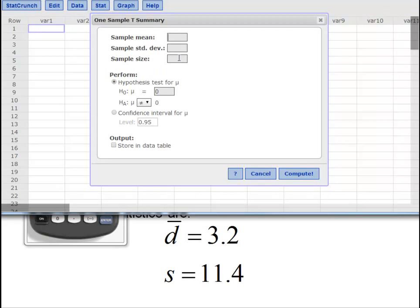We have to actually just rely on t statistics for one sample with summary, and here is where we would type in our mean, our standard deviation, our sample size. We are testing that it is equal to zero and our alternative is that it is greater than, and then compute it and we get the exact same answers.